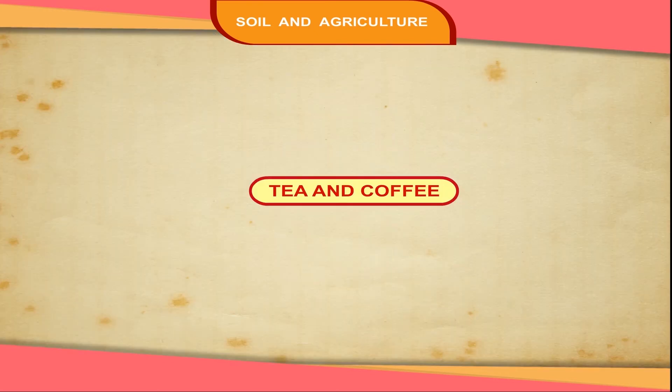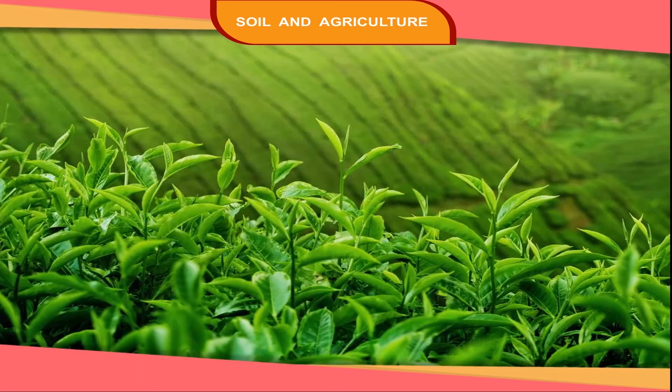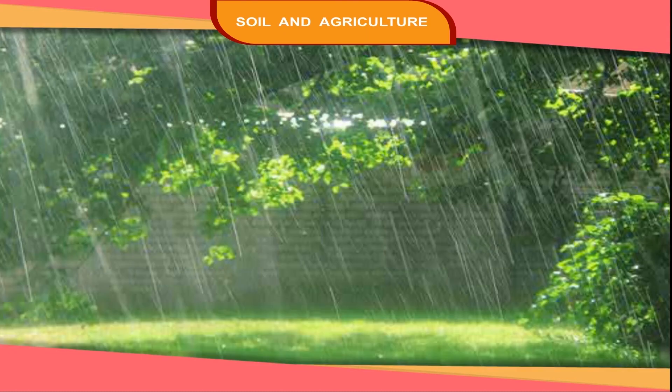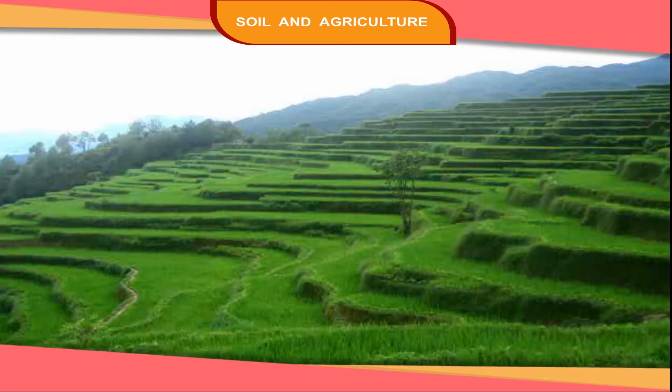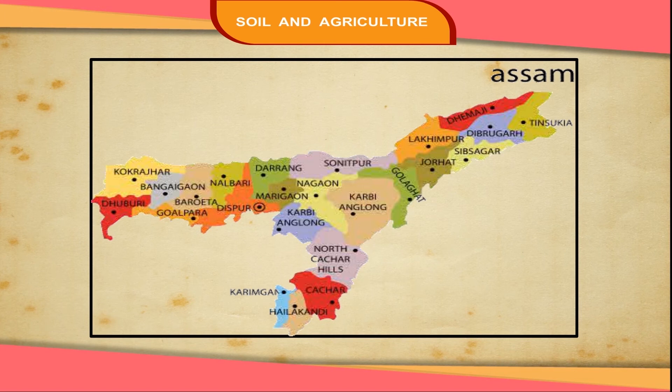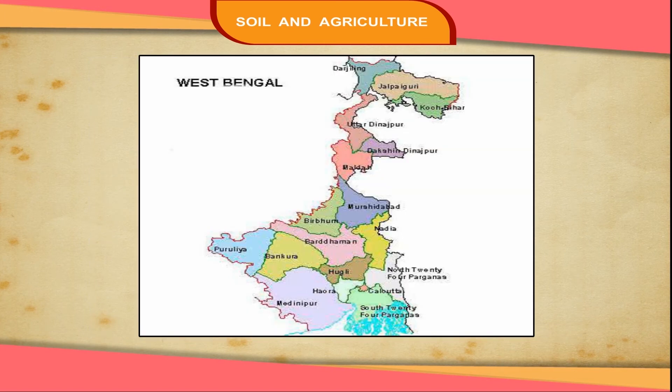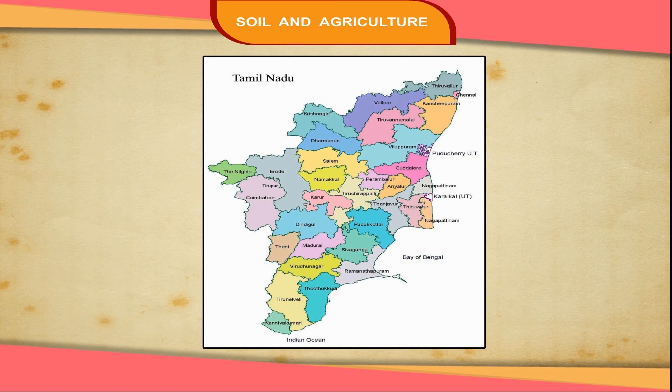Tea is grown in hot rainy climate and sloping land. The main producer of tea is Assam. It is also grown in West Bengal and Tamil Nadu.